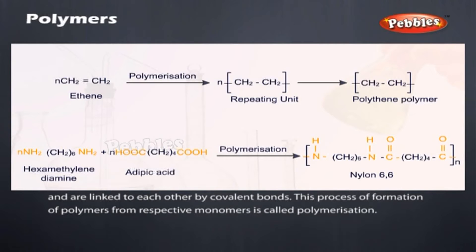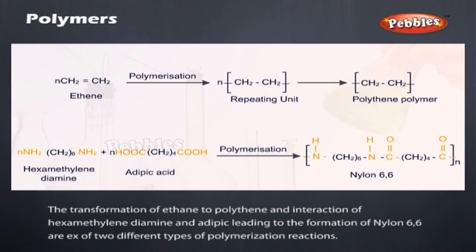This process of formation of polymers from respective monomers is called polymerization. The transformation of ethane to polythene, and the interaction of hexamethylene diamine and adipic acid leading to the formation of nylon 6,6, are examples of two different types of polymerization reactions.